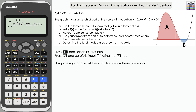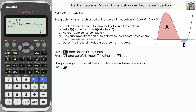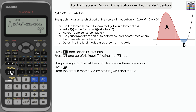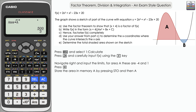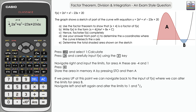For the red section, area A: the lower limit is -4 and the upper limit is 1. Press equals and we get 500/3 as a fraction. Press S↔D to see the decimal equivalent. I'm going to store this in memory A: press Store, then press A. So 500/3 is stored in A.